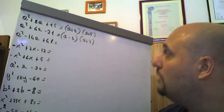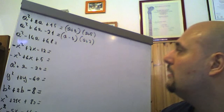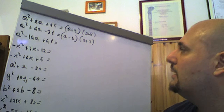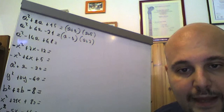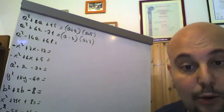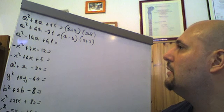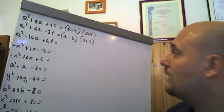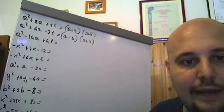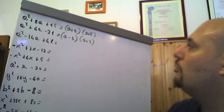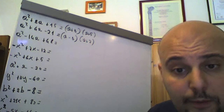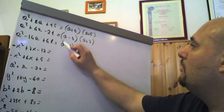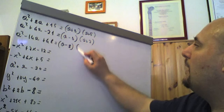A² − 15a + 48. Abbiamo che −12 per −4 fa 48 — anzi, consideriamo anche −8 per −6, che fa +48. Poiché −8 + (−6) = −14, proviamo invece: −8 per −6 è +48, ma la somma corretta è −8 + (−6) = −14. Quindi questo è (a − 8)(a − 6).